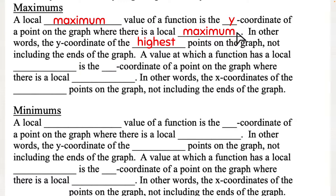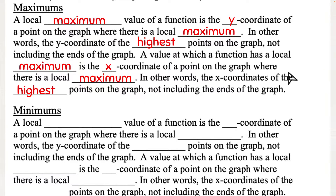A value at which a function has a local maximum is the x-coordinate of a point on the graph where there is a local maximum. In other words, the x-coordinate of the highest point on the graph, not including the ends of the graph, because the ends can just keep going up higher and higher. So if it swoops kind of like a W-shape, we're looking at the highest point of one of those swoops.